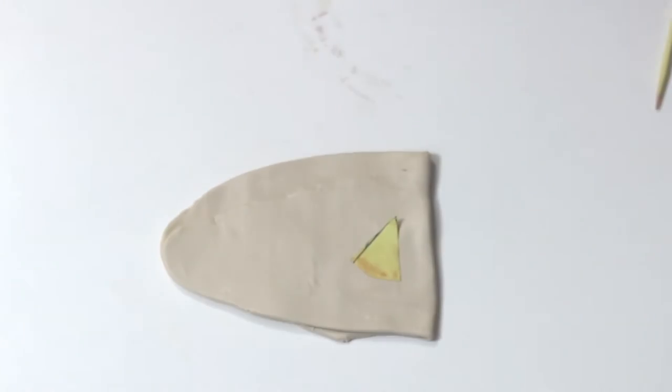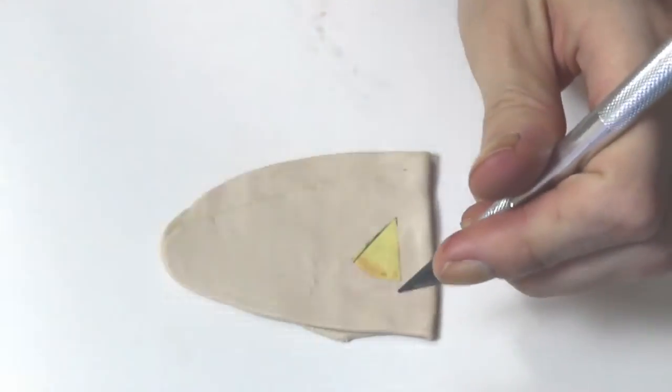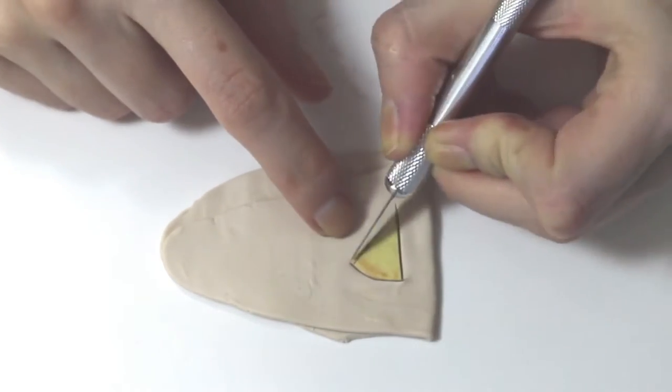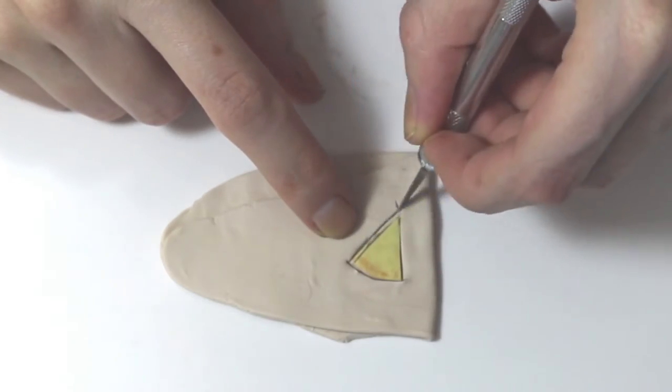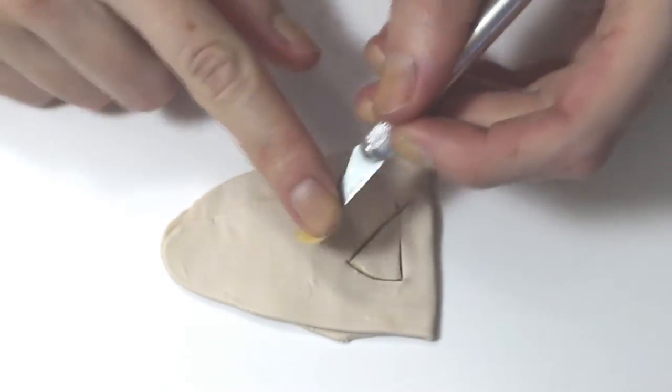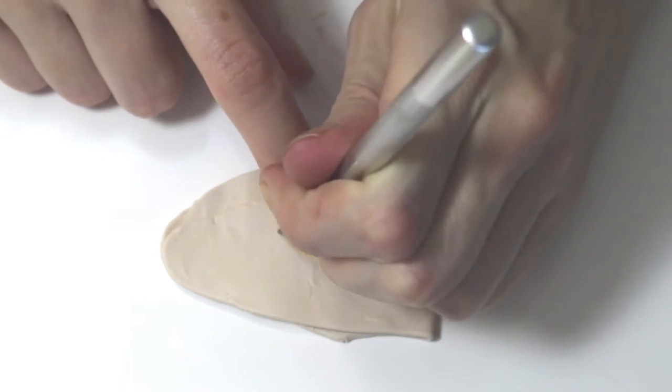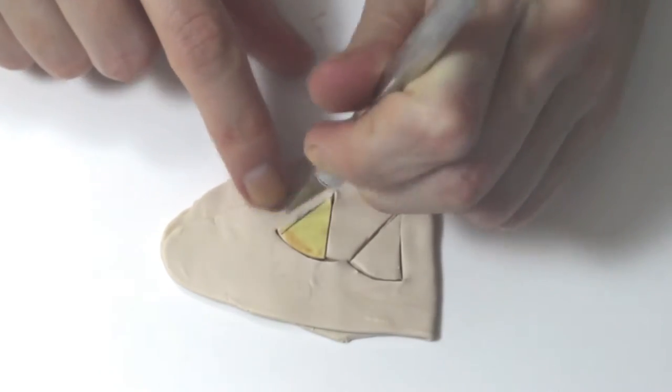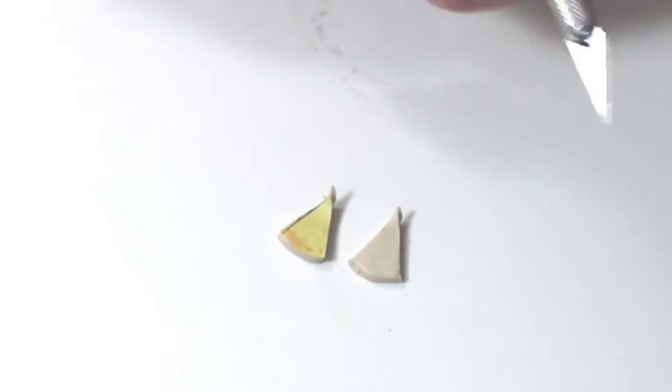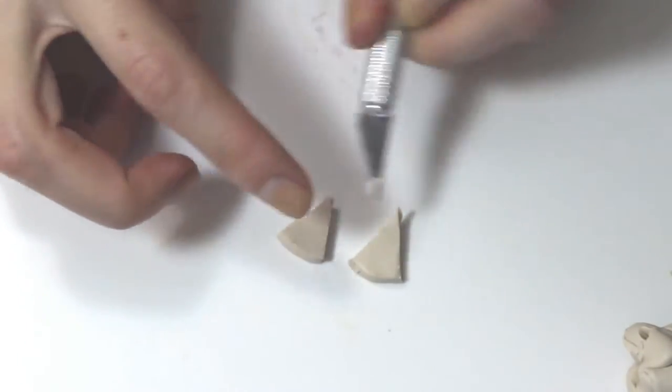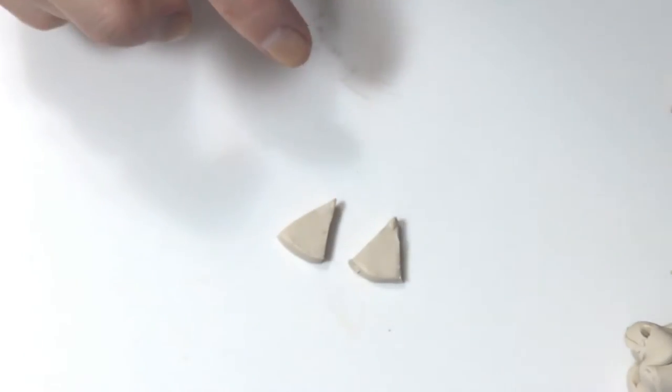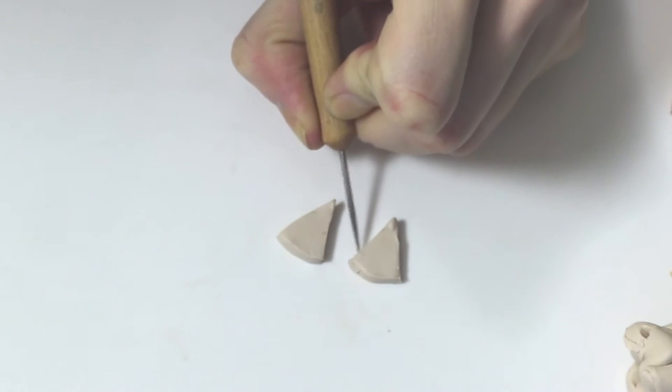So first you're going to take your Sahara clay and run it through your pasta machine at a three setting, and I like to fold it over once. Then I am using a little cutout that I made of a triangle with a rounded bottom, and you're just going to cut out two slices of that for the cake. And if it's a little bit soft like mine, you're just going to work it back together.